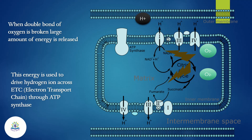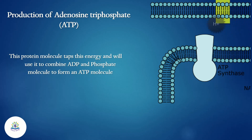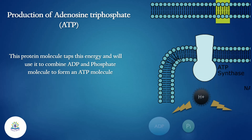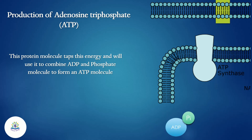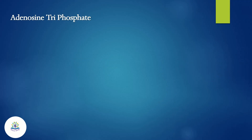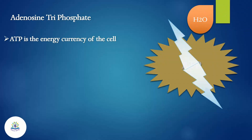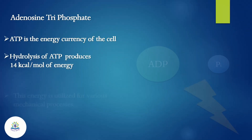This energy is used to drive hydrogen ions across the electron transport chain through ATP synthase. This protein molecule taps the energy and uses it to combine ADP and a phosphate molecule to form an ATP molecule. ATP is the energy currency of the cell. Hydrolysis of ATP produces 14 kilocalories per mole of energy.